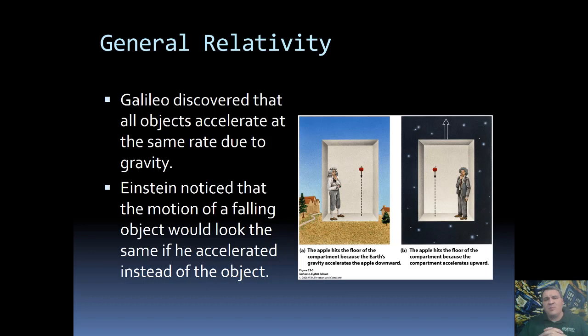The problem Einstein had going from special to general relativity was gravity. Specifically, the problem with gravity is that we treat it as a force, and if you're dealing with gravity as a force, you have to worry about everything else as a force and it all becomes complicated. But Einstein remembered something that Galileo had discovered. Galileo showed that all objects accelerate due to gravity at the same rate, if only gravity is acting on them.